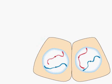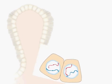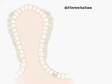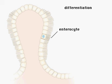Eventually, the stem cell undergoes cell cycle arrest and begins the differentiation process. The cell migrates up the villus and becomes an enterocyte. The enterocyte, covered by a dense carpet of microvilli, functions in nutrient absorption.